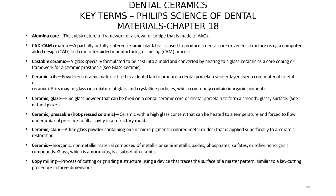Ceramic frits are powdered ceramic material fired in a dental lab to produce a dental porcelain veneer over a core. Frits may be glass or a mixture of glass and crystalline particles, commonly containing inorganic pigments. Ceramic glazes can be powder or — more recently — paste, applied on the restoration surface as the last firing step to give a nice glossy, shiny look. Ceramic pressable or heat-pressed ceramic is the process we have been discussing throughout this presentation.